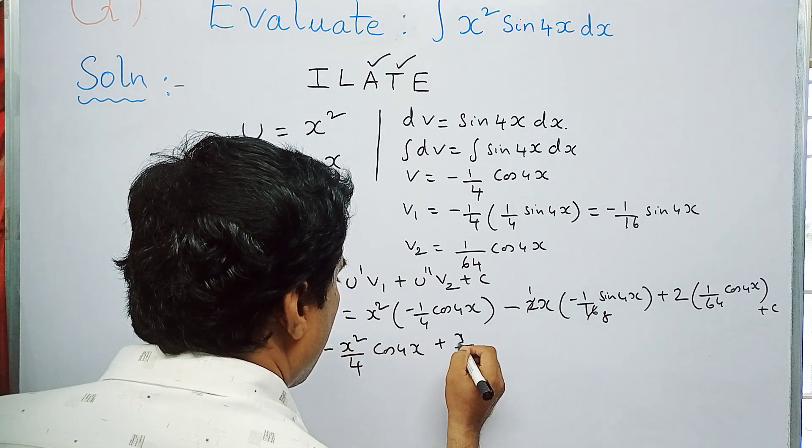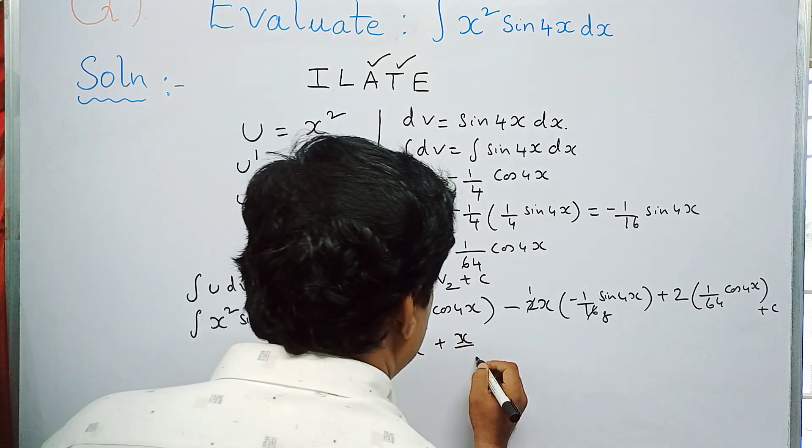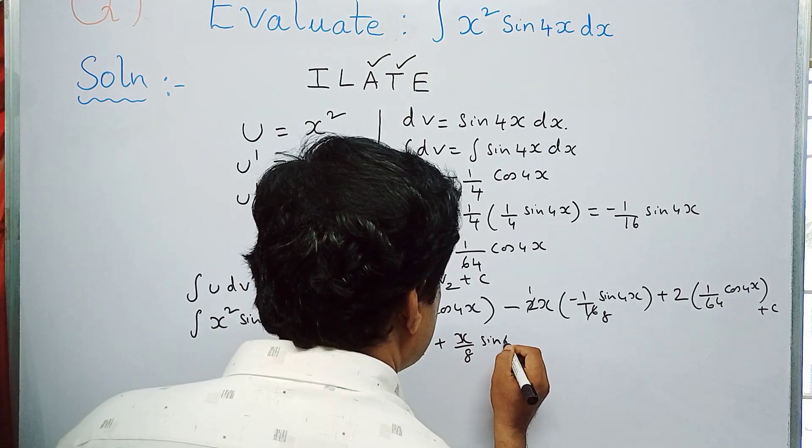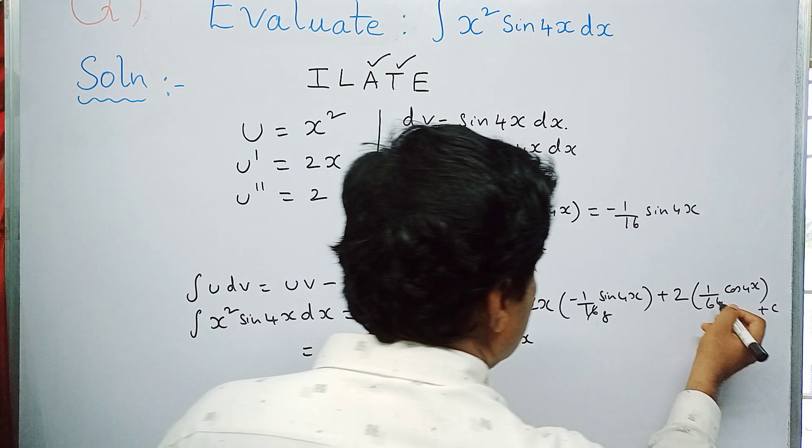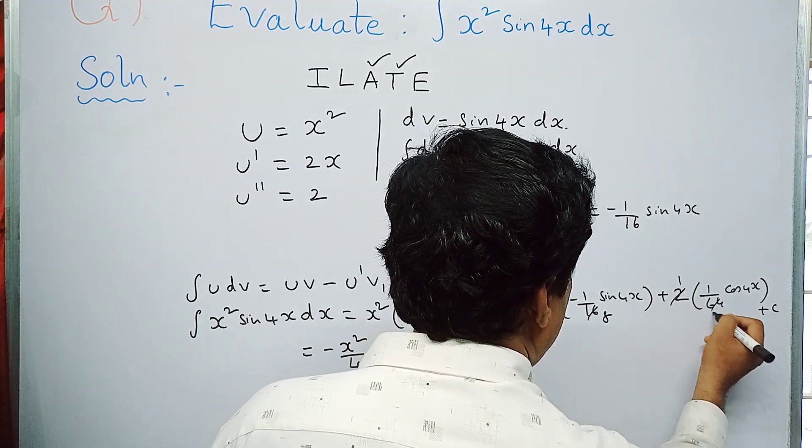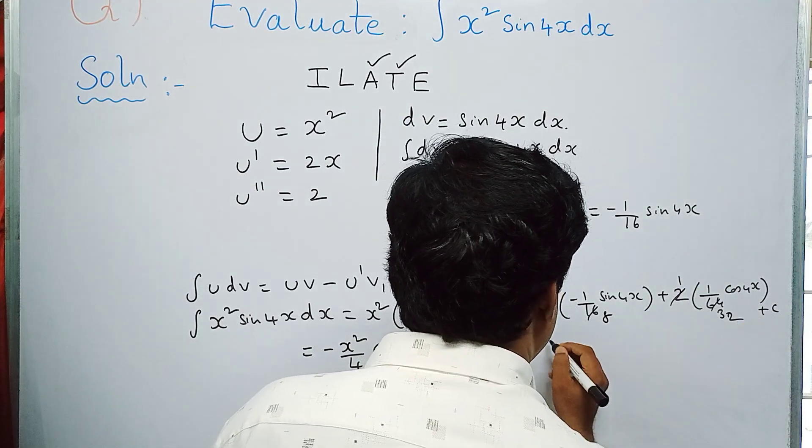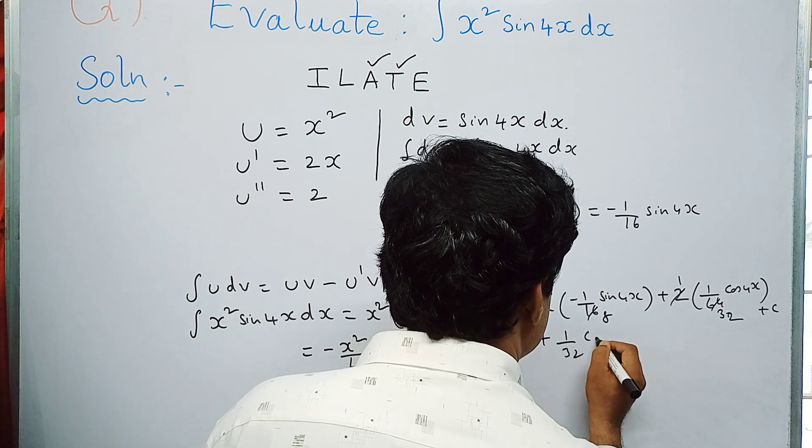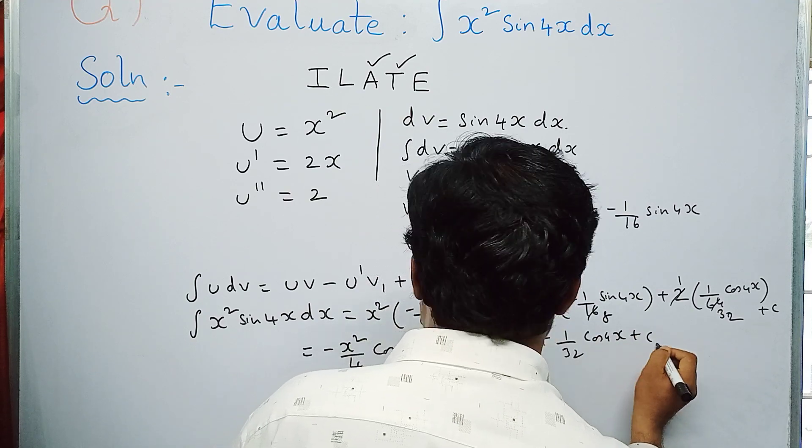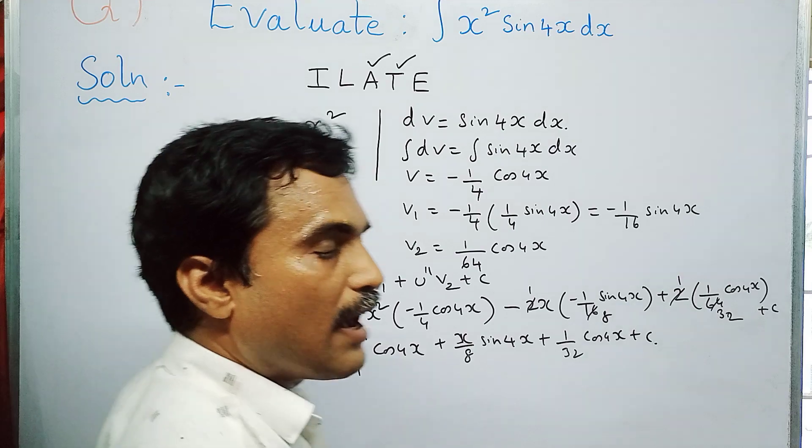So we will get x by 8 sine 4x. And here also you can cancel 2—2 becomes 1 and this will be 32. So plus 1 by 32 cos 4x plus c. So this is the final solution for the above problem.